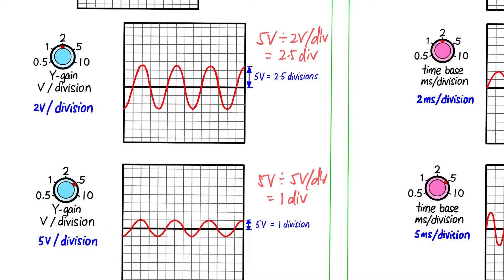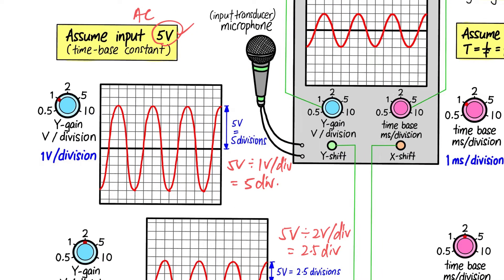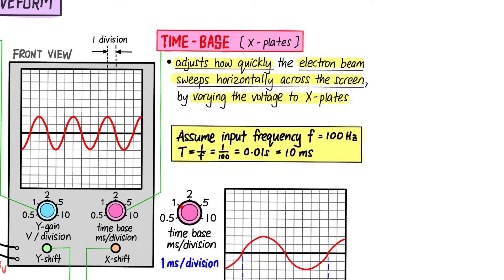So it works both ways — if the amplitude appears too small and is difficult to see, you can set the Y gain from 5 volts per division down to 1 volt per division and the wave will be very clear and easy to read. Next, let's go to the time base. The time base adjusts how quickly the electron beam sweeps horizontally across the screen. Let's assume an AC input voltage with a frequency of 100 Hz, giving a period of 10 milliseconds.